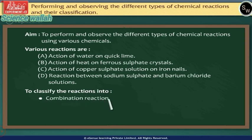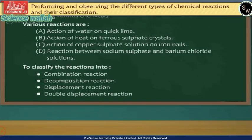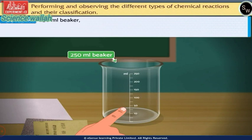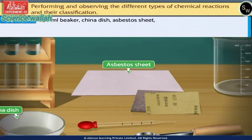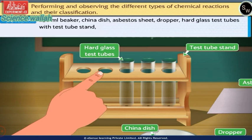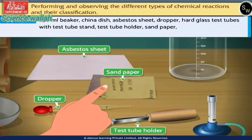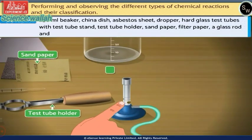These reactions have to be classified into combination reaction, decomposition reaction, displacement reaction, and double displacement reaction. The apparatus required are a 250ml beaker, china dish, asbestos sheet, dropper, hard glass test tubes with test tube stand, test tube holder, sandpaper, filter paper, a glass rod, and a burner.